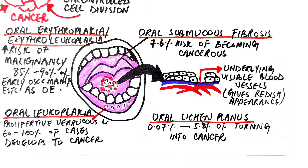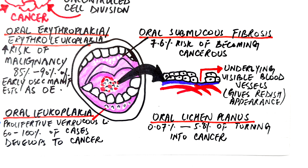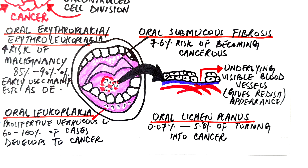85 to 90% of early oral squamous cell carcinomas initially manifest as oral erythroplakia. In its early stages, oral squamous cell carcinoma is often painless, but as it progresses, patients may experience discomfort, ulceration, nodularity, and firm attachment to surrounding tissues. Oral submucous fibrosis often presents with burning sensations or sensitivity to spicy foods, carries a 7.5% risk of becoming cancerous over 17 years, and may co-occur with leukoplakia. Oral lichen planus, affecting 1–2% of the population, has a malignant transformation risk ranging from 0.07 to 5.8%.